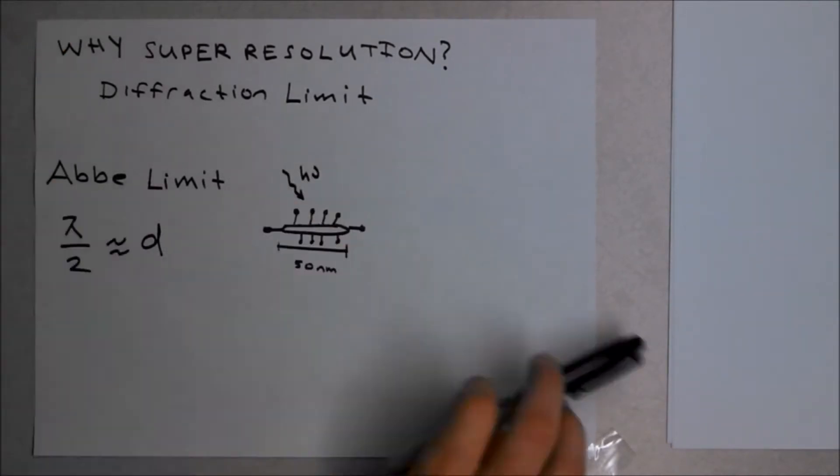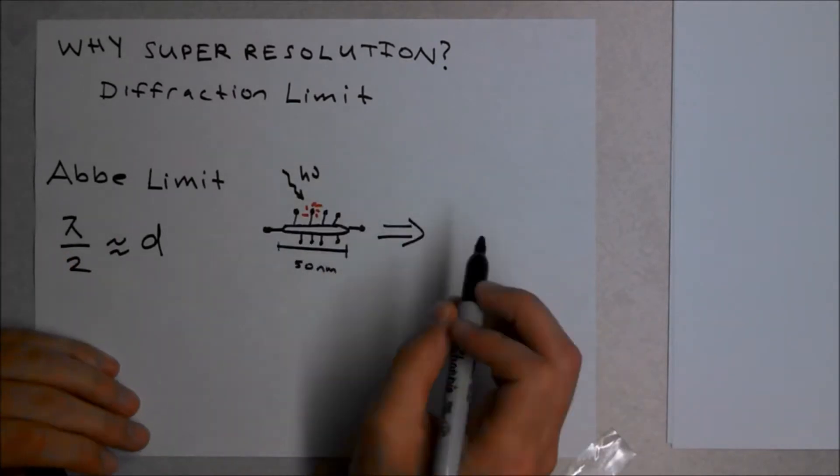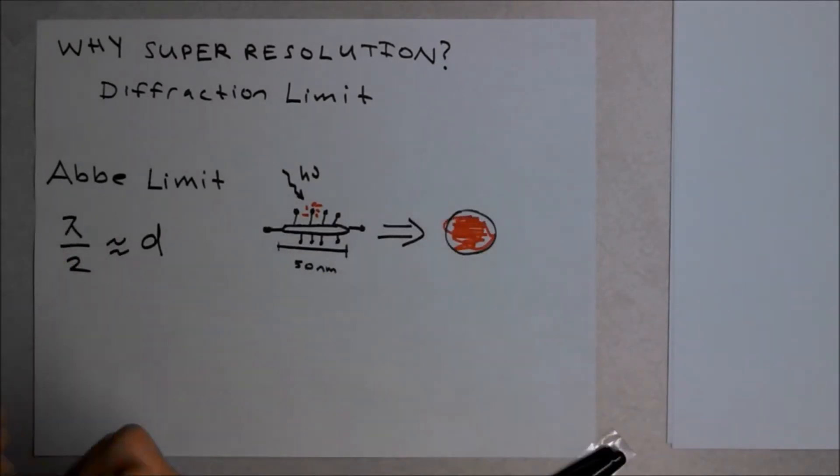So if we are measuring light from a particle smaller than the Abbe limit, we will not be able to resolve the shape of that particle.